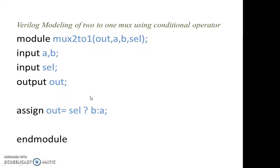Think about how you can combine the two programs and how you can build given circuits effectively — whether to use intermediate signals or operators to implement any function. This is given as an assignment; you need to write it and submit it back. Thank you.